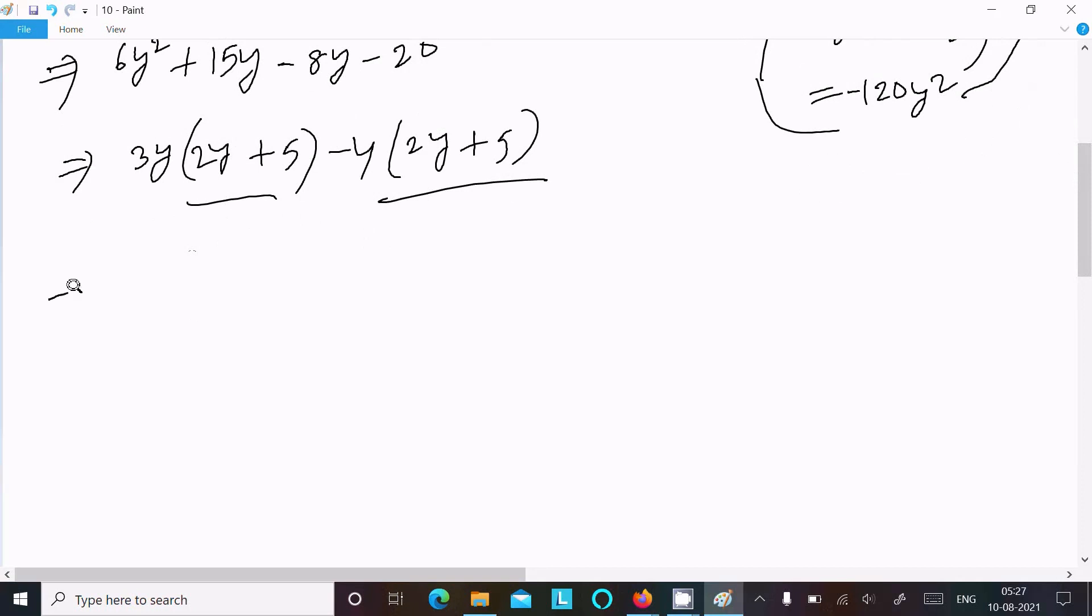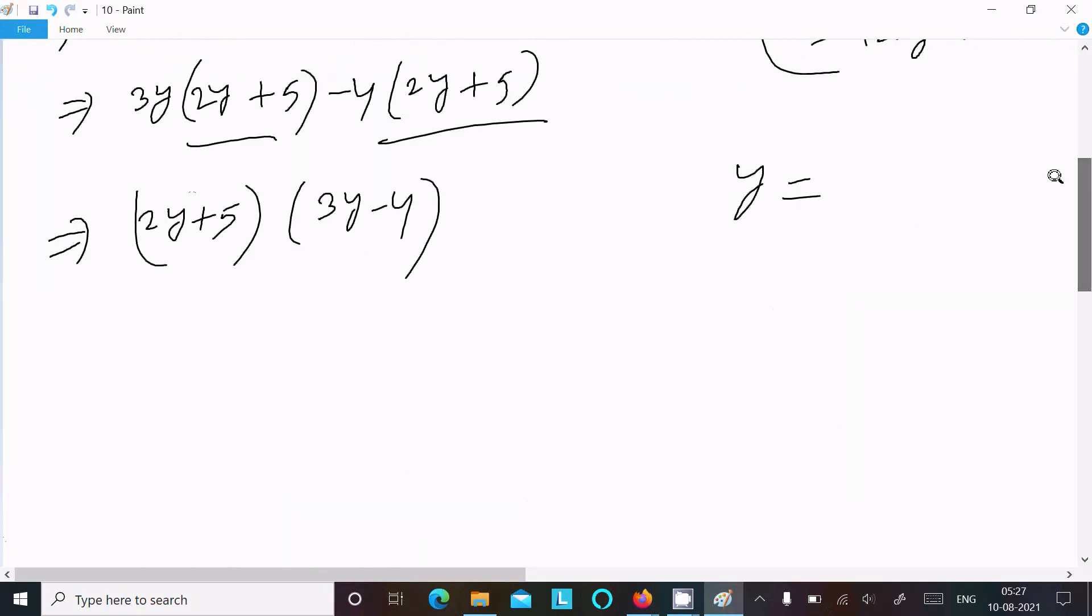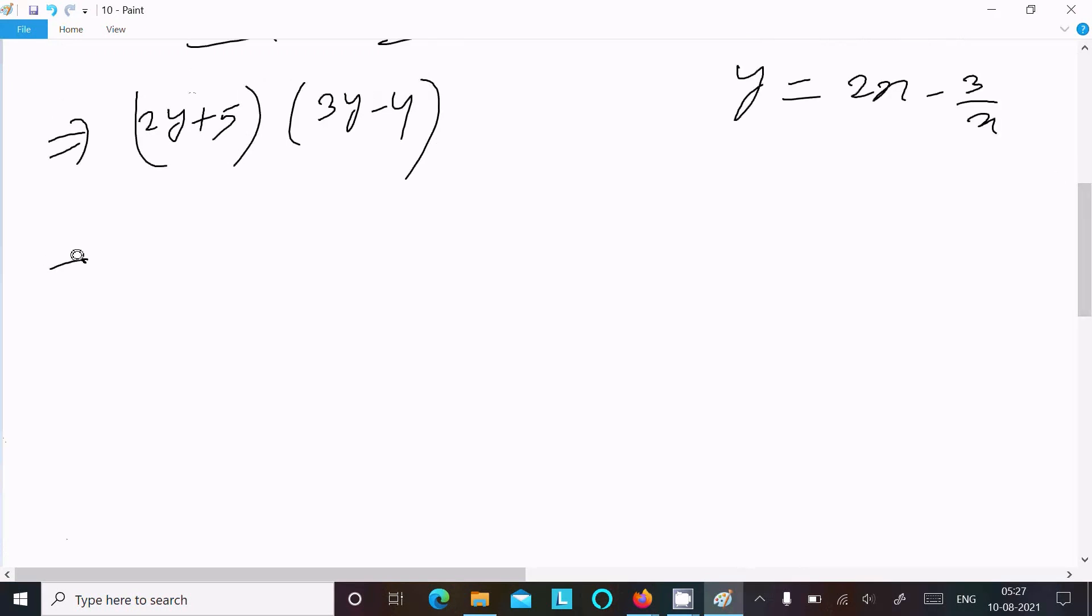Thereafter, 2y + 5 is the common. Here you can get 3y - 4. Now y that I assumed is 2x - 3/x.